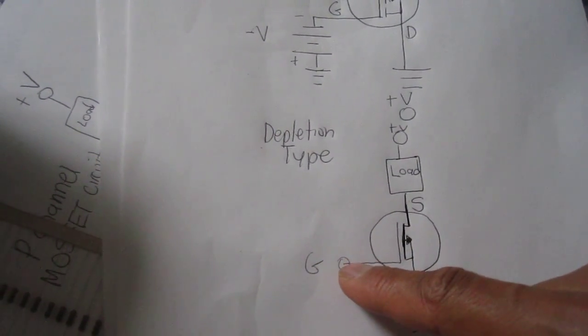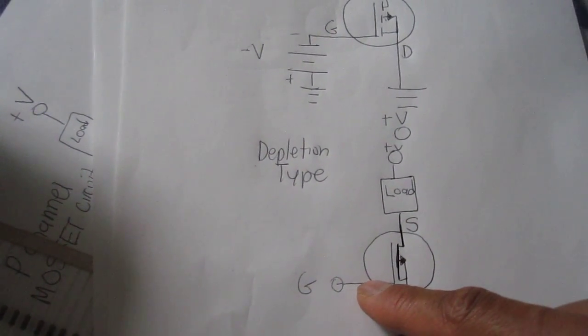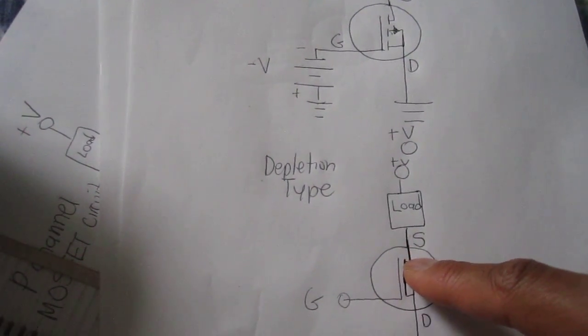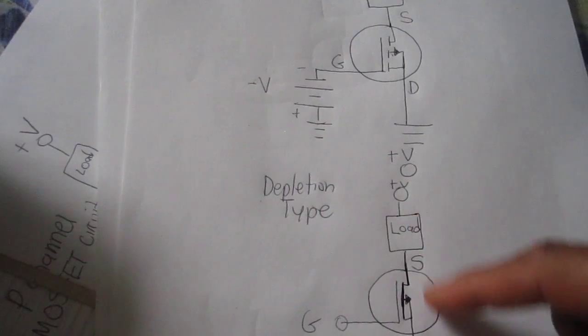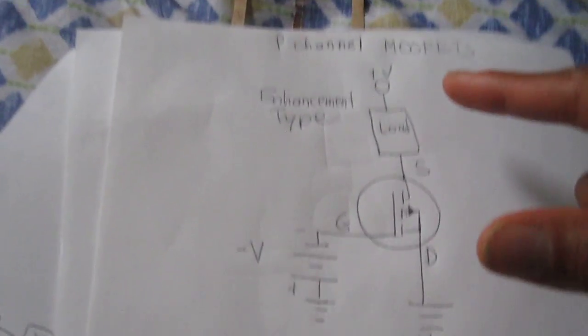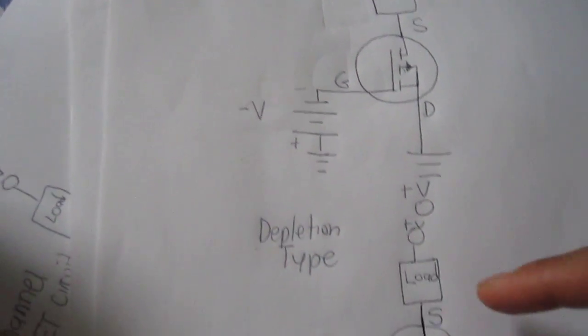If we want to turn it off, we apply negative voltage to the gate terminal. Once the voltage reaches a certain level, it shuts off completely. This is how to bias p-channel MOSFETs.